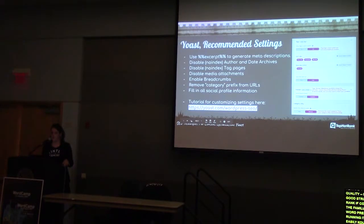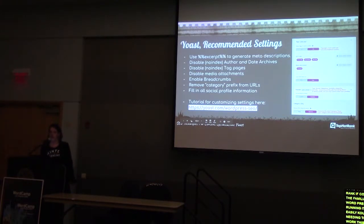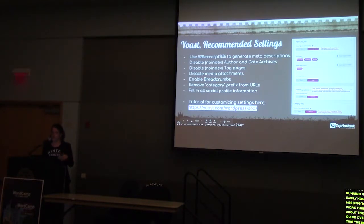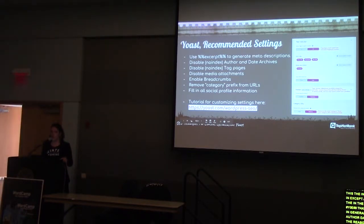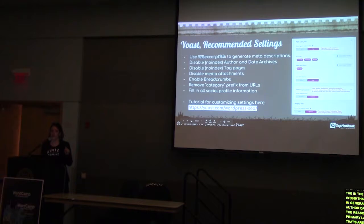You want to use excerpts to generate your meta descriptions. In the new version of Yoast you can write in 'excerpt' and it puts it in the purple bubble; in older versions you used percent signs. You also want to no-index your author, date archives, and tag pages in your blog. These are not your primary landing pages — they clog up Google's index — and you want to allocate your crawl budget to the top-level, important, money-making pages rather than having spiders crawl pages that don't mean anything.